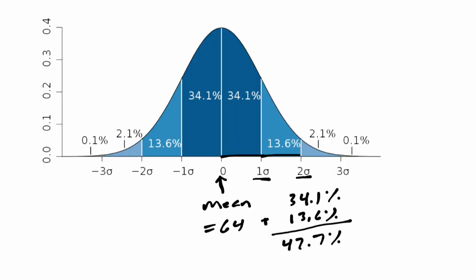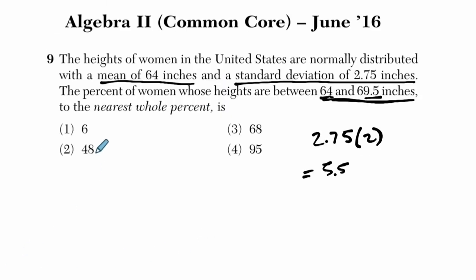And that's going to be on this side, here's 64. Here's two standard deviations away, 69.5 inches. And altogether we get 47.7 percent, which is closest to 48 percent here.